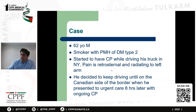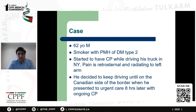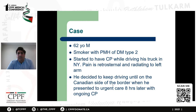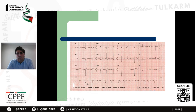Going back to the case: this is a 62-year-old male, smoker, with a past medical history of diabetes mellitus type 2. He started having chest pain while driving his truck in New York State and decided to keep driving until reaching the Canadian side. When seen in the urgent clinic, he was still having pain — eight to nine hours after onset. They immediately sent him to the emergency room where an ECG was done. The main findings: ST elevation in leads II, III, and AVF, some in the lateral leads V5 and V6, reciprocal ST depressions in leads I and AVL, and Q waves developing inferiorly — signifying a late presentation MI already infarcting that territory.